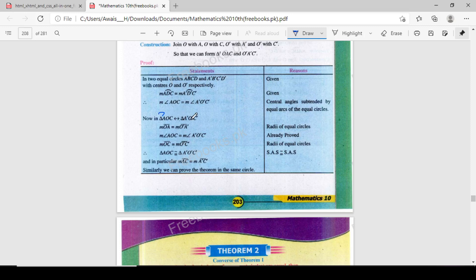Triangle AOC: measurement angle AOC is equal to measurement angle A'O'C'. Radii of a circle, so OA equals O'A' and OC equals O'C' are radii proved. So triangle AOC is congruent to triangle A'O'C' by SAS. And in particular, measurement AC is equal to A'C'.